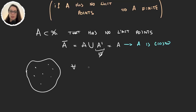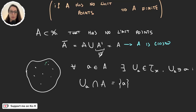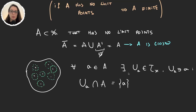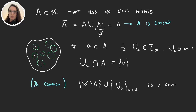This means that for every element in this set there will exist a neighbourhood U_a — a neighbourhood of a, so it's an element in the topology that contains the element a — such that U_a intersection A only equals to the single point a. So in this drawing we would always be able to find these sets.